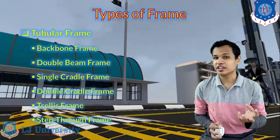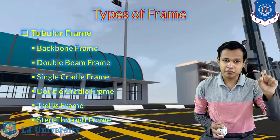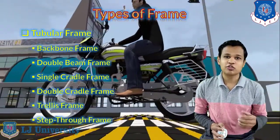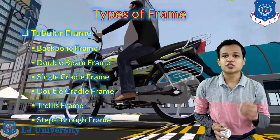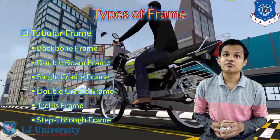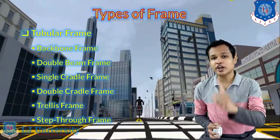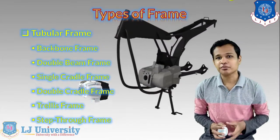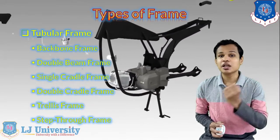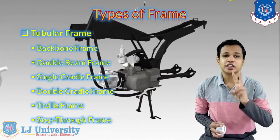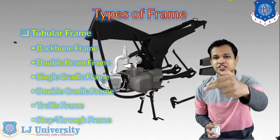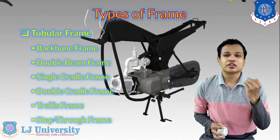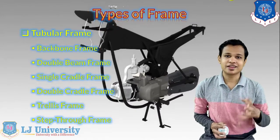In the components we saw in the earlier video, the main tube was the main component of our frame used for two wheelers. So in that main frame, we are using only one tube in the case of the backbone frame, whereas in the double beam frame we are using two tube sections side by side, which provides extra support.